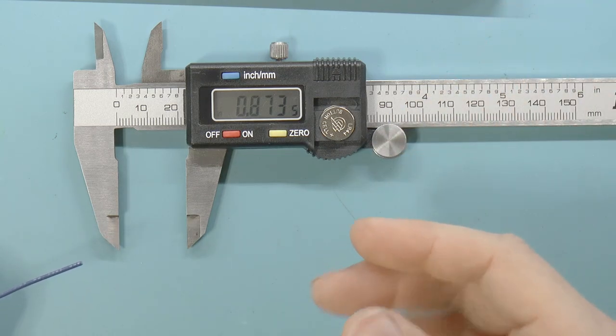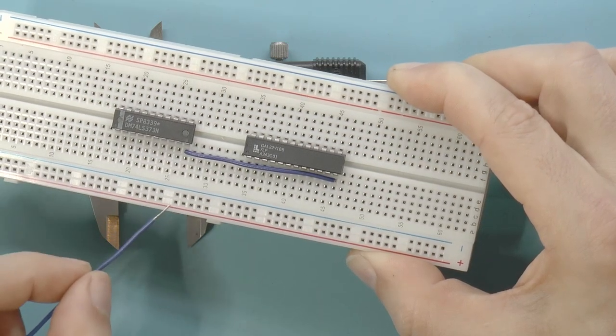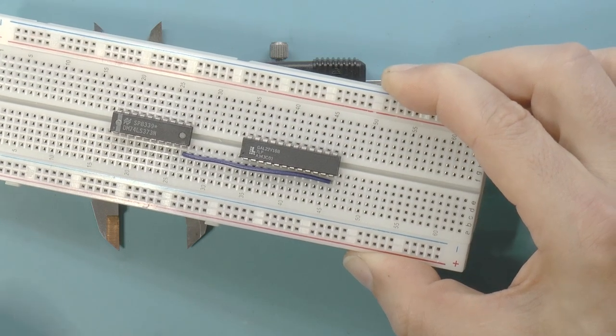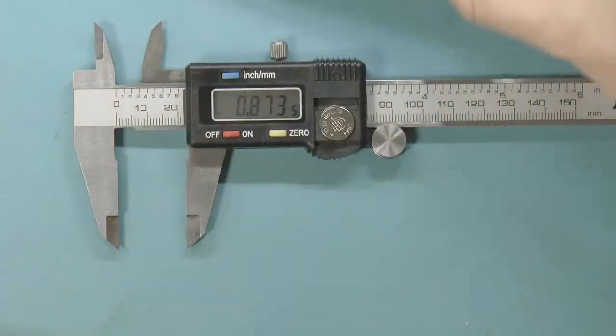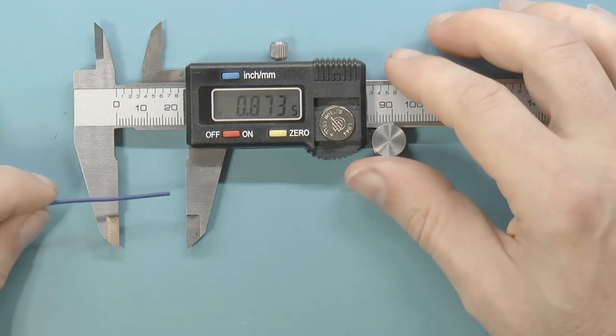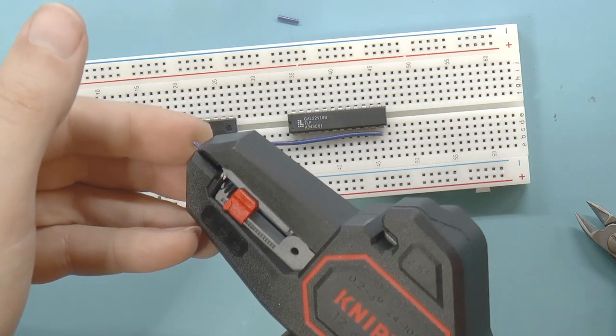So let's go ahead and make that cut. Now, obviously, you don't want to be measuring that all the time. However, jumpers between ground and minus and VCC and plus are quite frequent. So you're going to want to make a whole bunch of jumpers of this size. So here we go, 0.87, almost 0.875.